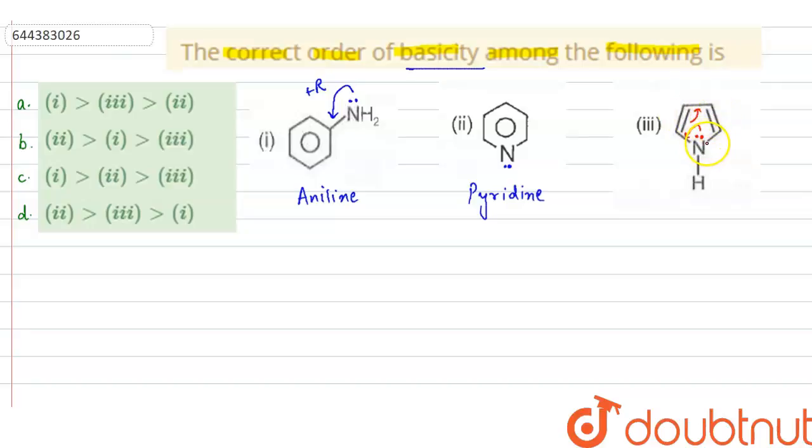Because if you calculate the pi electrons here, it will be 2 plus 2 plus 2, so total 6 pi electrons which follows the Huckel's rule. So it is aromatic only because of the delocalization of these two electrons of nitrogen.